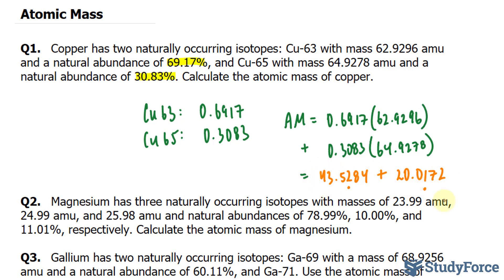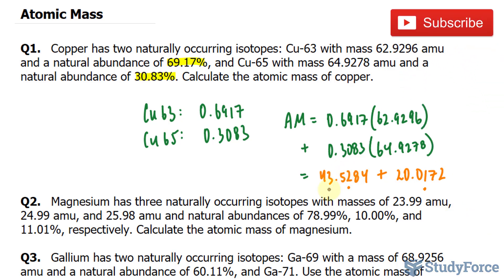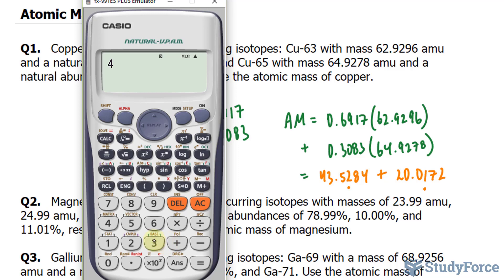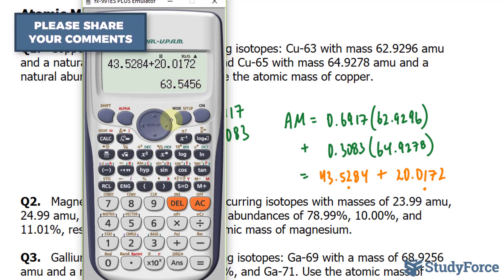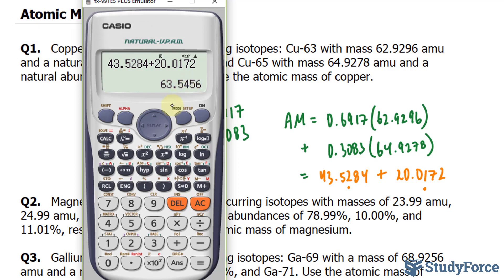Now by adding these, I should end up with a number that has two significant figures after the decimal place, because when you add, you keep in mind the number of decimal places, and both of these have two decimal places. So let's add: 43.5284 plus 20.0172 gives us 63.54. Since this number is even and the first discarded number is a five, we won't be rounding upwards. If it were odd, then yes, I would round up. So our final answer is 63.54.